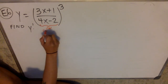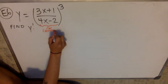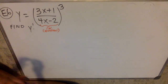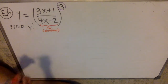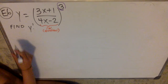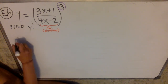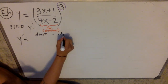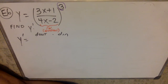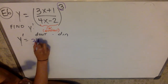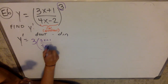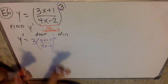So your inside is a quotient, and we're going to try and simplify this as much as we can. My outside is this stuff to the third. When I go to find my y prime, I'm going to get that my y prime is the derivative of the outside times the derivative of the inside. The derivative of the outside is going to be 3 stuff to the second — that part's not awful.